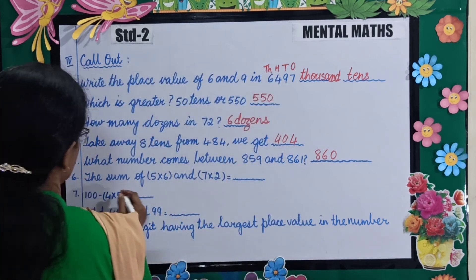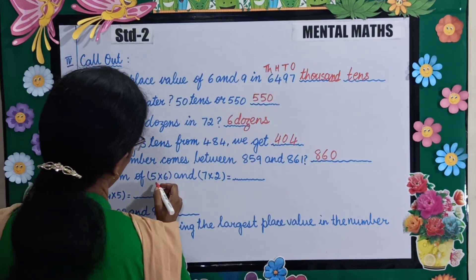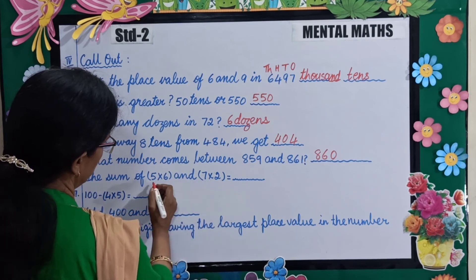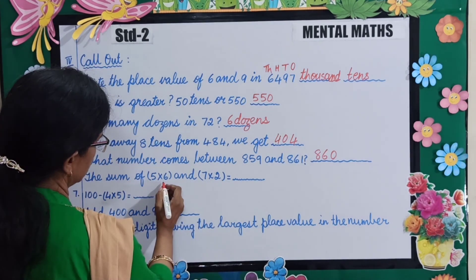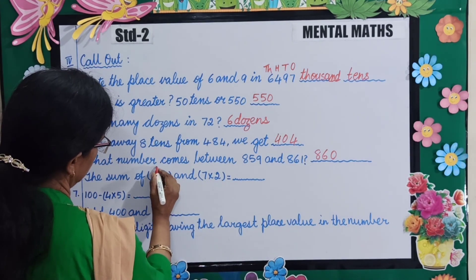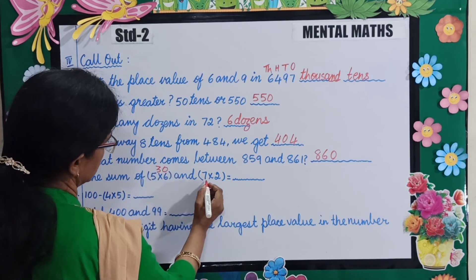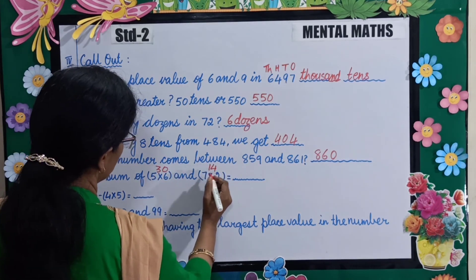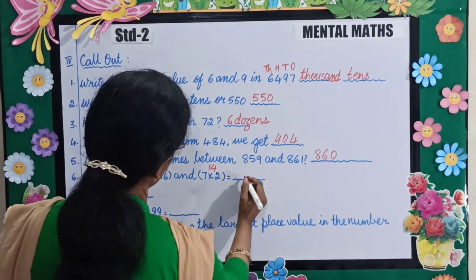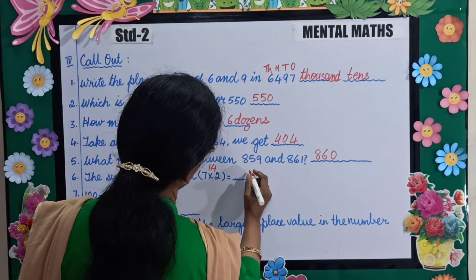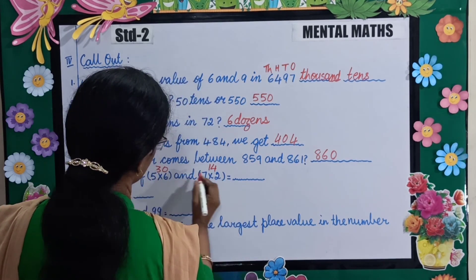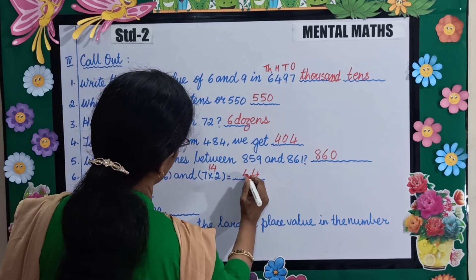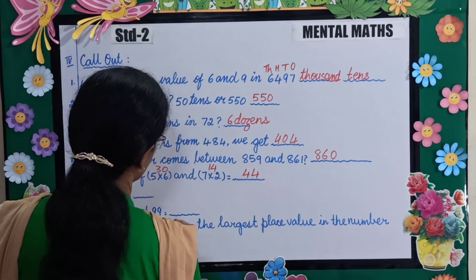The sum of 5 multiplied by 6 and 7 multiplied by 2. So 5 times 6 is 30 and 7 times 2 is 14. Total: 4 plus 0 is 4, 1 plus 3 is 4. Your answer is 44.